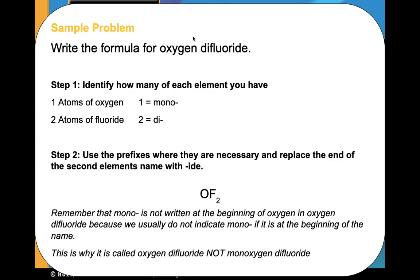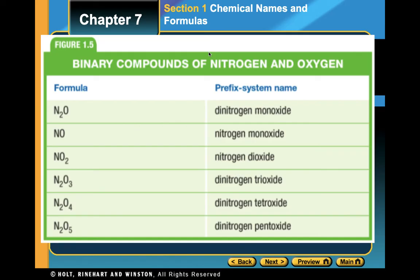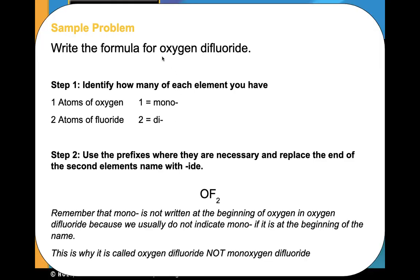Now let's try the reverse: given the name 'oxygen difluoride,' give me the formula. There is no prefix on oxygen, which tells you there is only one oxygen, so the formula starts with just O. Then how many fluorines? Di means two, so I have two fluorines. My overall compound is OF2.